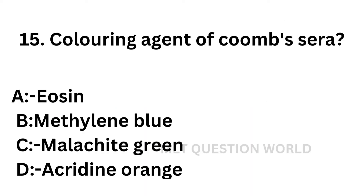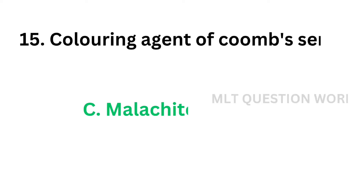Question number 15: Coloring agent of Coombs serum — option A: Eosin, option B: Methylene blue, option C: Malachite green, option D: Acridine orange. Coombs serum is green colored and the coloring agent added is malachite green. The correct answer is option C, malachite green. The coloring agent of Coombs serum is malachite green.